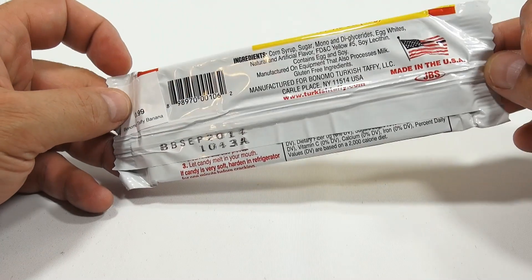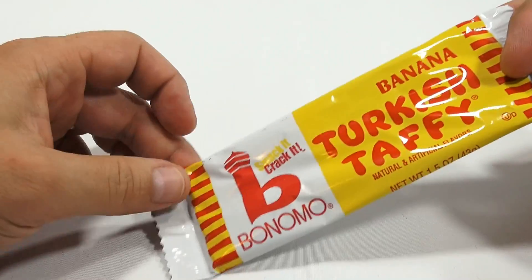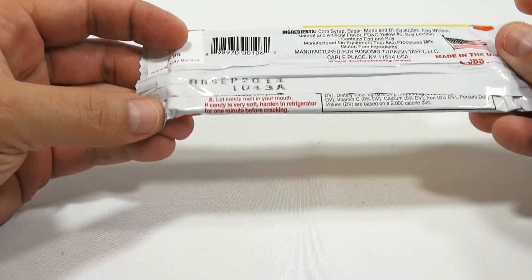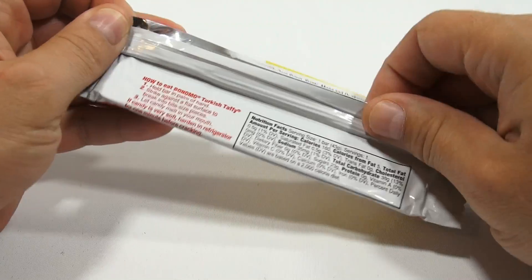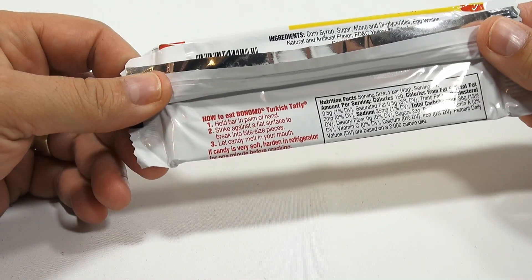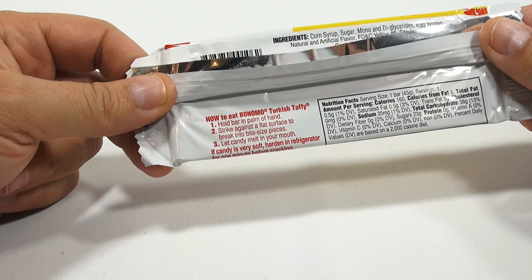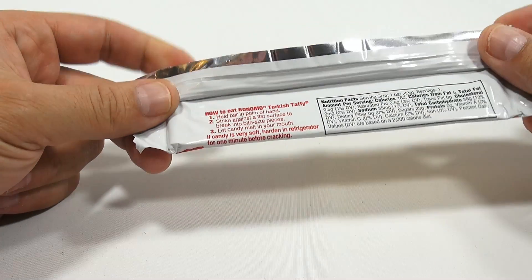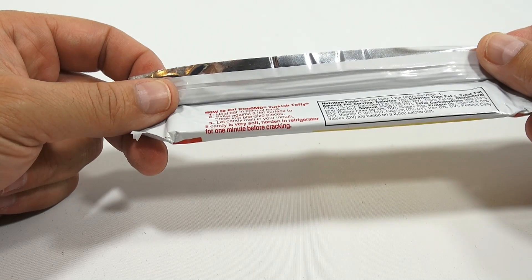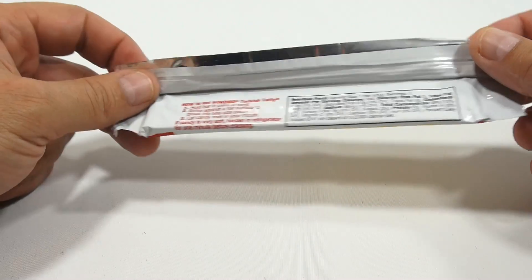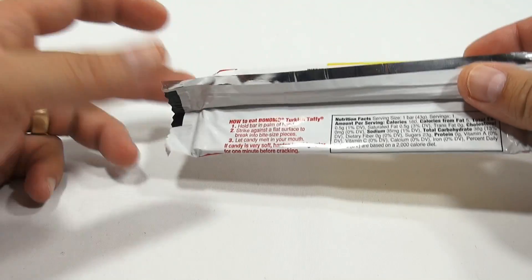Made in the USA. Turkish taffy made in the USA. And then I notice these instructions here. How to eat: hold bar in palm of hand, strike against flat surface to break into bite-sized pieces. That candy melt in your mouth. If candy is very soft, harden in refrigerator for one minute before cracking. Now I checked it's pretty hard.